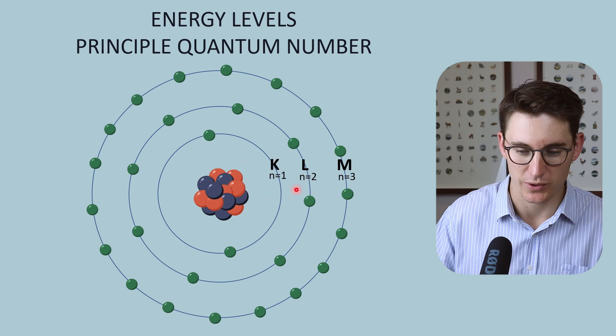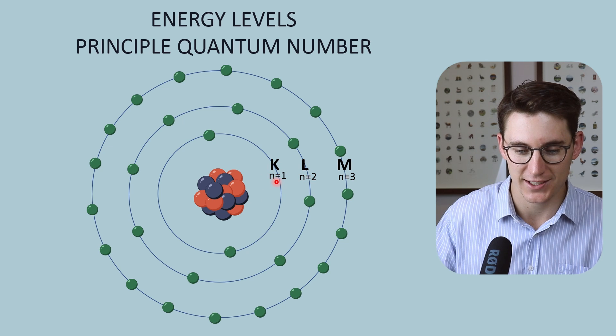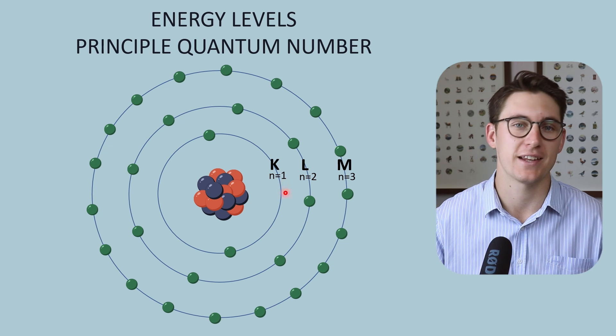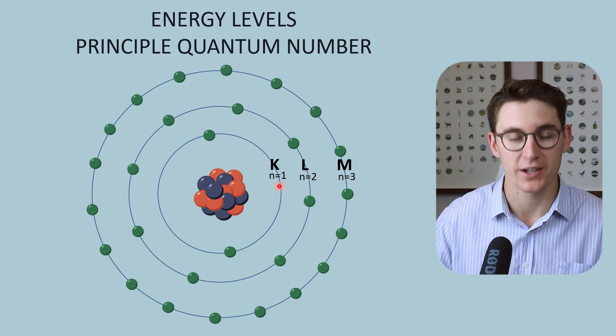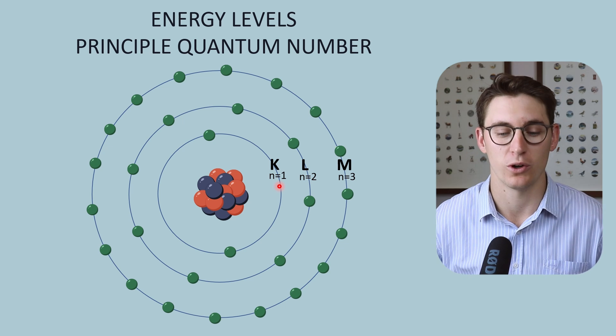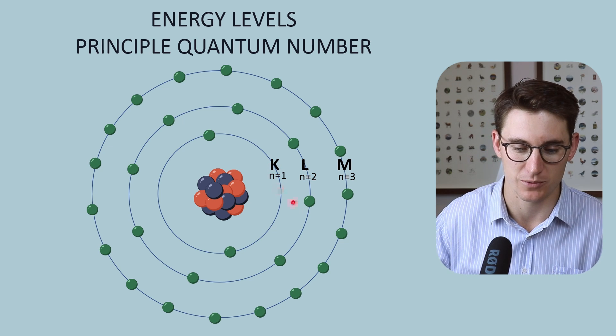We can also label these with n equals 1. n is the quantum number or the principal quantum number of that energy level. We start with 1 and again work our way out, n equals 2, 3, 4 and so on. This is what's known as the principal quantum number.